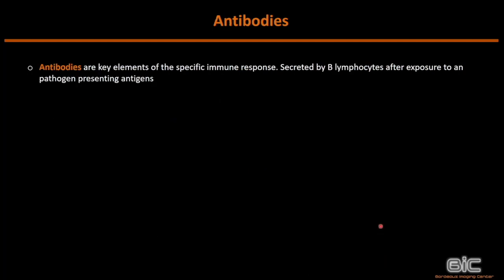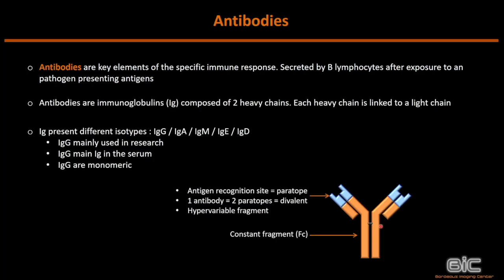The key of immunolabelings are the antibodies. Antibodies are elements of the specific immune response secreted by B lymphocytes after exposure to a pathogen presenting antigens. They are immunoglobulins composed of two heavy chains linked to light chains, with a hyper variable zone — the paratope — as the epitope antigen recognition site. Each antibody has two paratopes, making it divalent. We mainly use IgG in research because they are the most present in serum and because they are monomeric, compared to pentameric IgM, making them easier to use as probes.